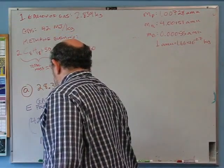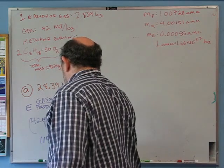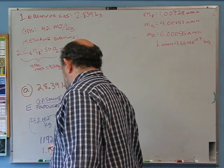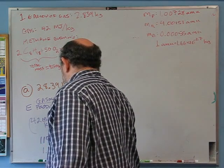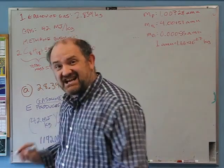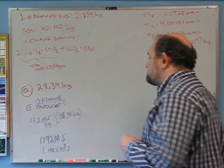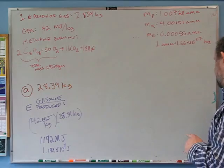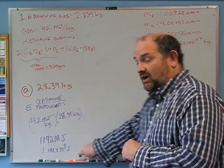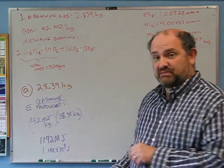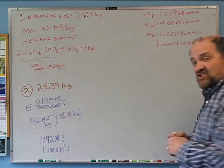That gives 1192 megajoules, or 1.192×10⁹ joules — that's a gigajoule. That's how much energy you produce by burning 10 gallons of gas. If you do it all at once, that's called an explosion.